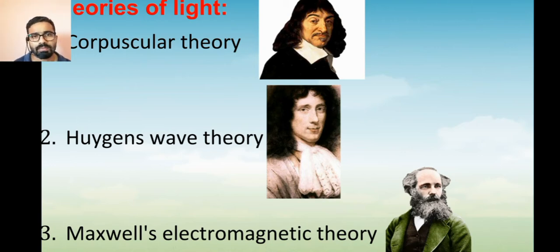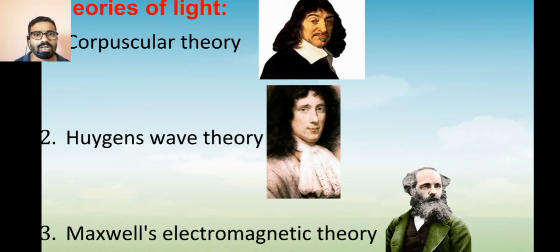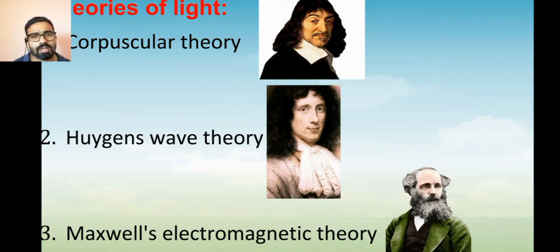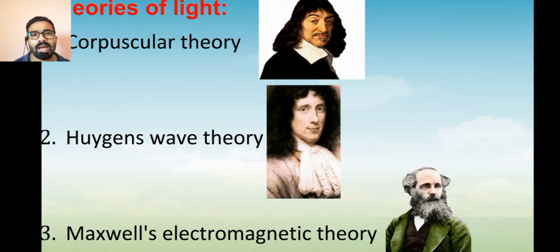The second one is Huygens' wave theory. The first one is called the particle theory — using that theory, Descartes said that light travels in the form of particles. Huygens proposed that light travels in the form of waves, which is why it is a wave theory. Maxwell also said that light travels in the form of waves, and his theory is called the electromagnetic theory because he combined two concepts: electricity and magnetism.